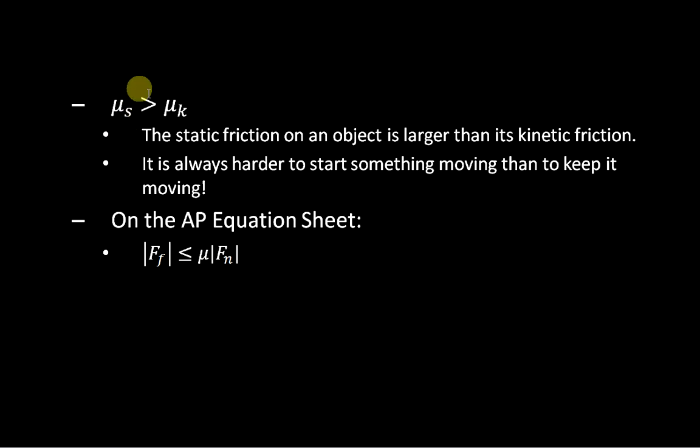Last couple things. Here's another inequality. And it's saying that the coefficient of static friction is larger than the coefficient of kinetic friction. And that simply means that for any given object on a surface, there's more static friction than there will be kinetic friction. The static friction on an object for a given surface is always larger than the kinetic friction of that same object on the same surface.